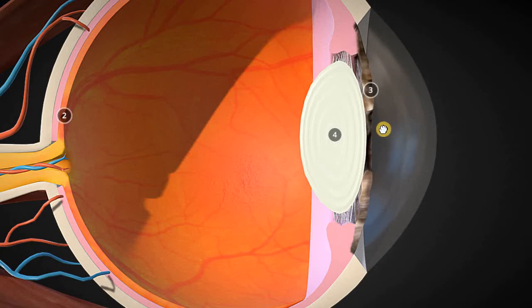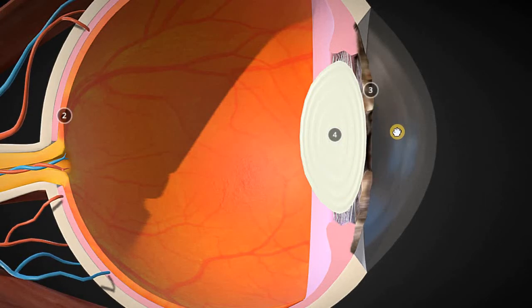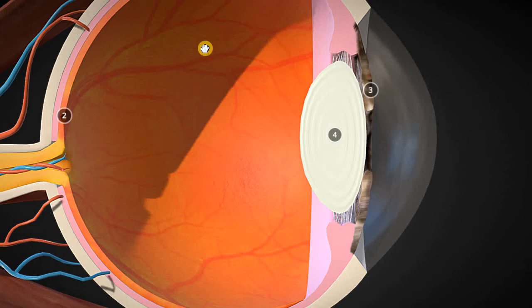The rest of that area — that cloudy area — is the aqueous humor. Basically, everything in front of the lens is the aqueous humor, and everything behind the lens, or posterior to the lens, would be the vitreous humor.